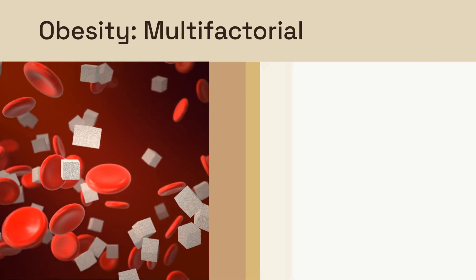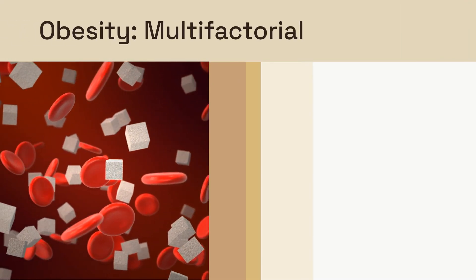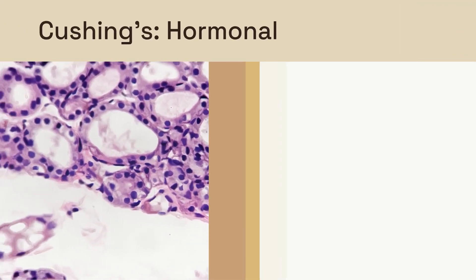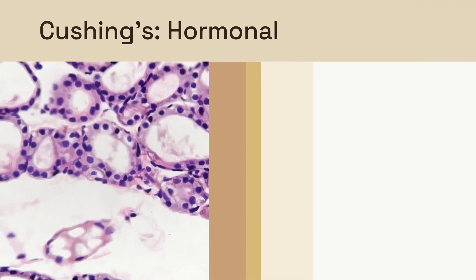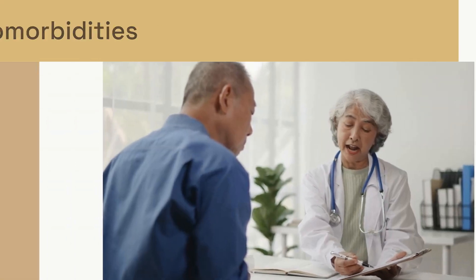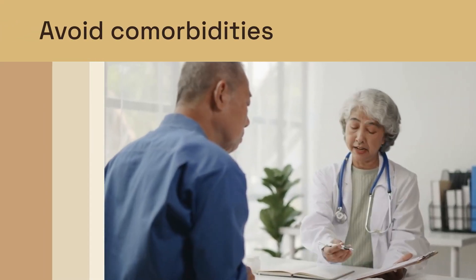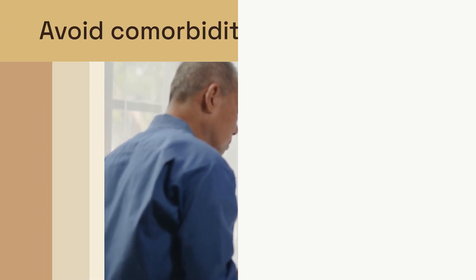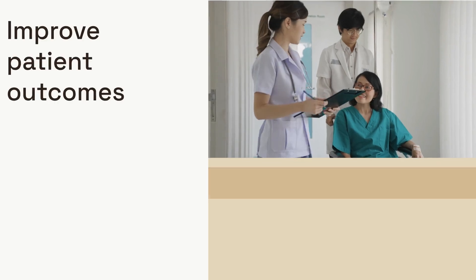Obesity is a multifactorial metabolic disorder, while Cushing's Syndrome stems from a singular hormonal excess. The importance of early diagnosis cannot be overstated. Early diagnosis helps avoid severe, long-term comorbidities.